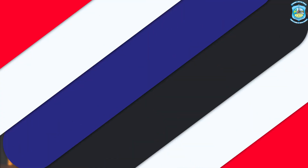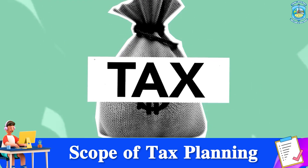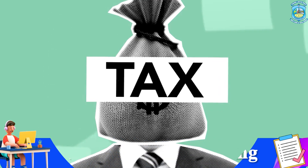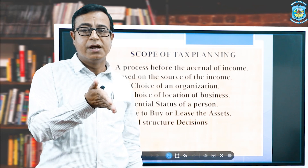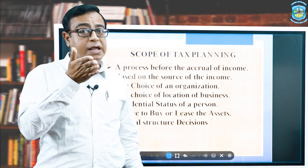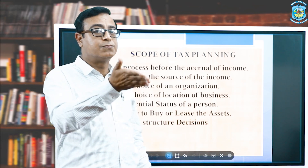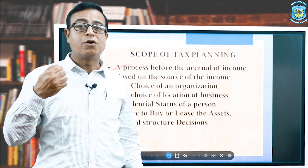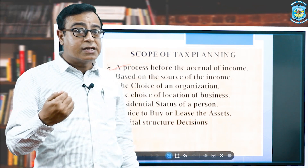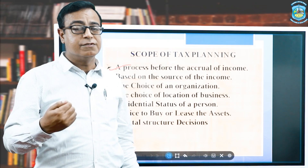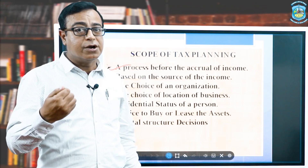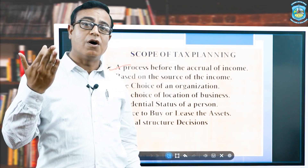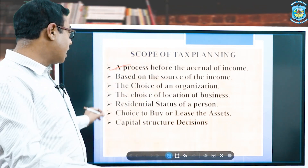Now we look at the scope of tax planning — what areas and criteria are involved and what we have to do. This is a process that starts before the accrual of income. Ideally, tax planning runs continuously and simultaneously with the earning of income. The tax planning process starts with earning your income.